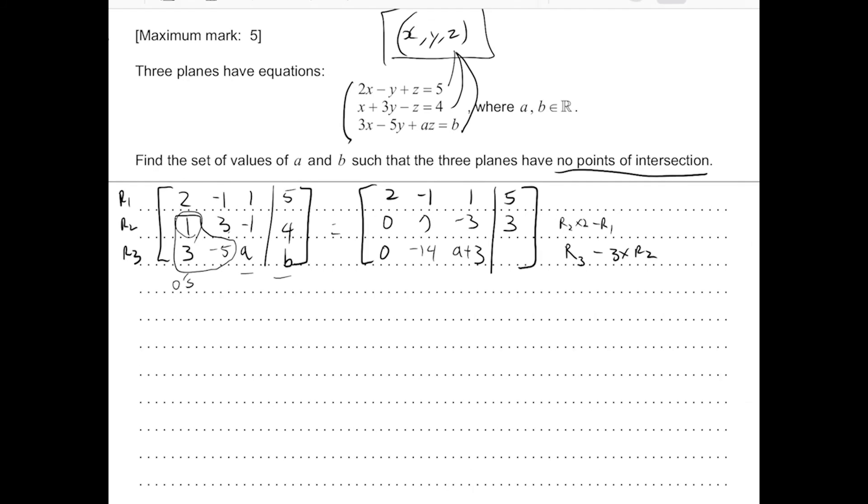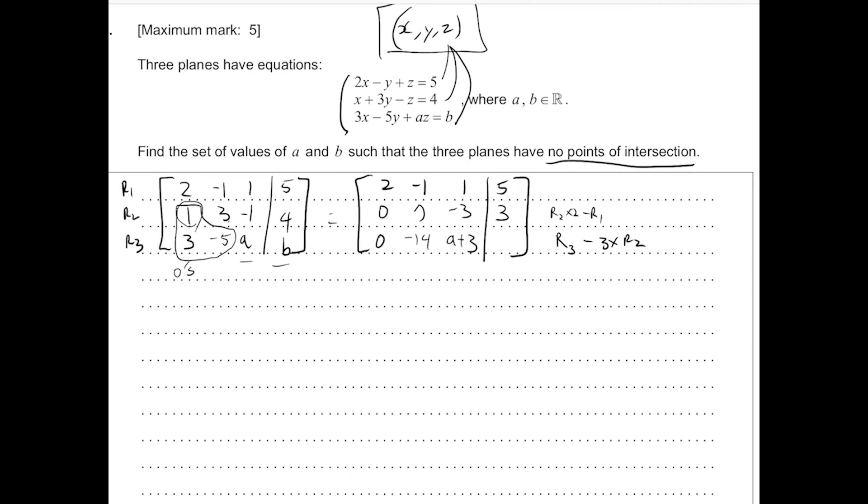A minus 3 times negative 1, that's an A plus 3. And B minus 3 times 4. So that's a B minus 12.